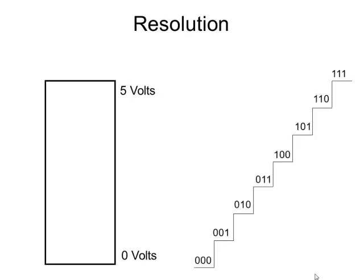Let's say I did a 3-bit analog-to-digital converter. With 3 bits, I have eight possible outputs, or eight possible values. That means each step is going to be one eighth of the total. What's one eighth of five volts? The resolution there would be 0.625 volts, or 625 millivolts.